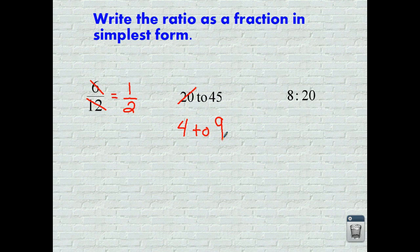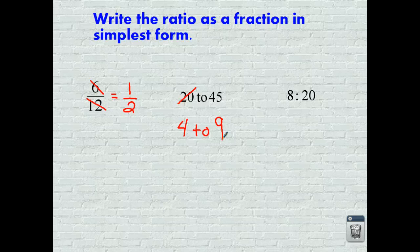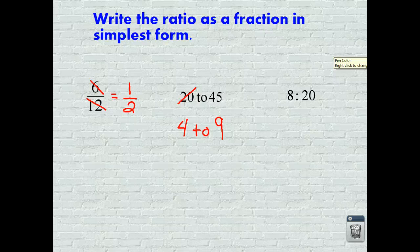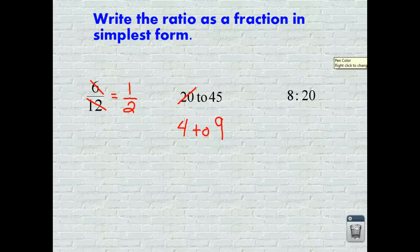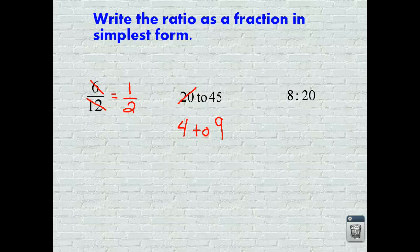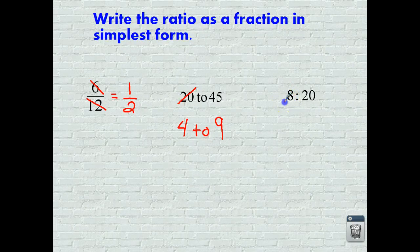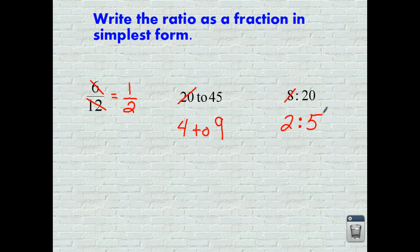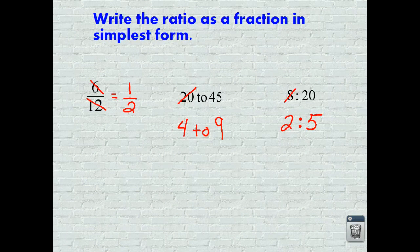The third one is using the colon, so let's simplify this. 2 would work, but I think there's a bigger number out there. What do you think it is? That's 4, you're right. So 4 goes into 8 two times, and 4 goes into 20 five times, and that is your simplified ratio.